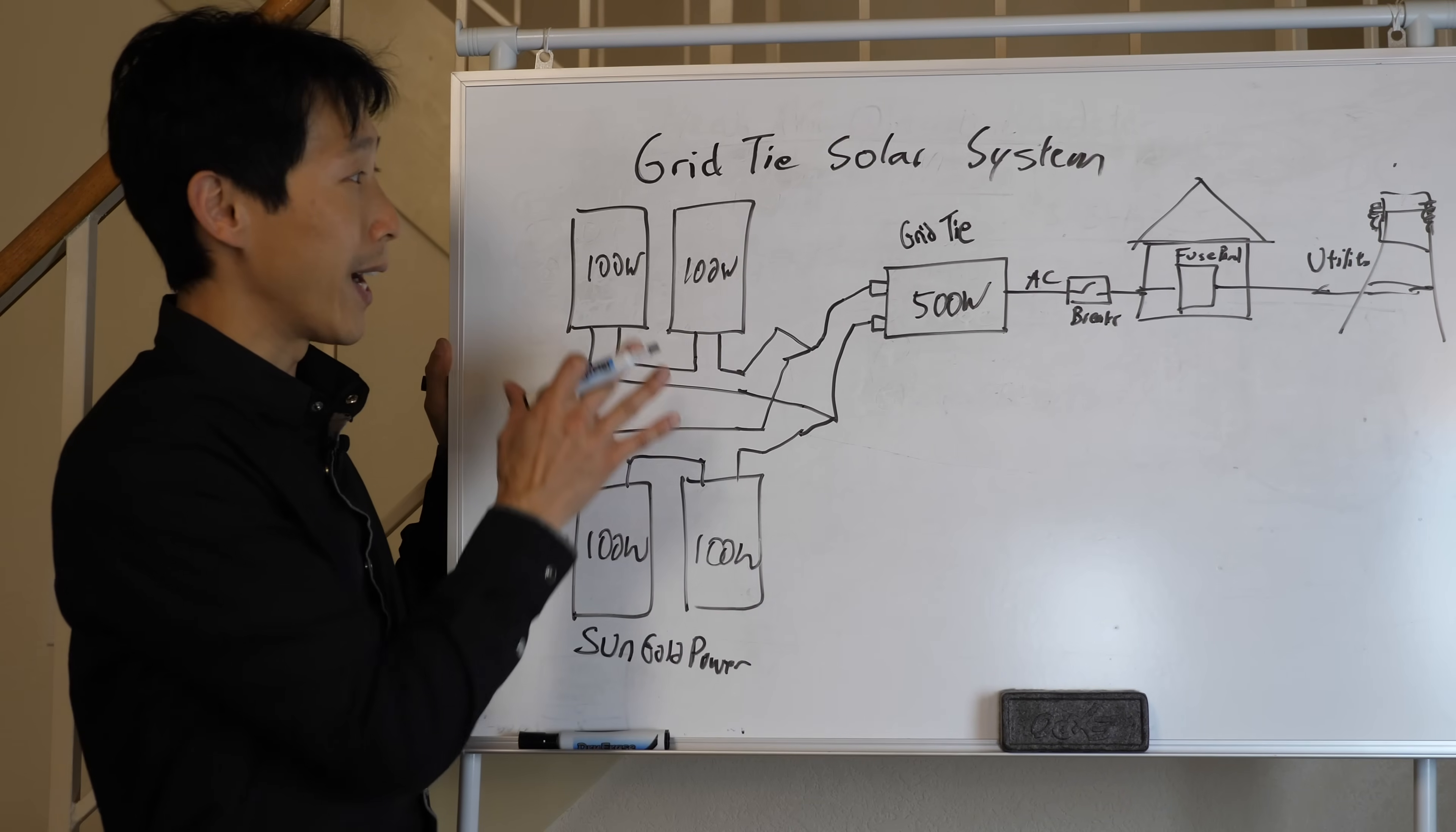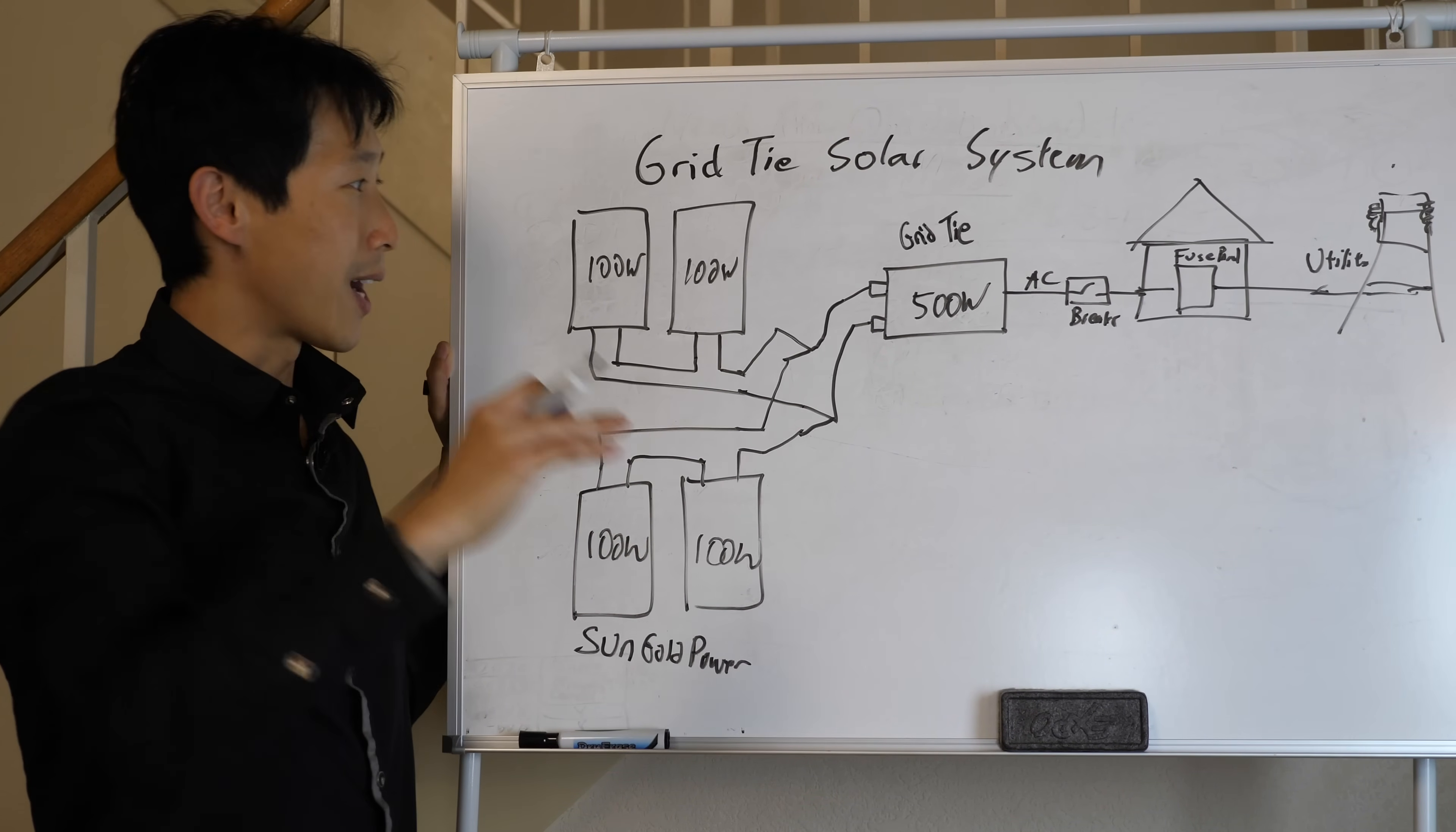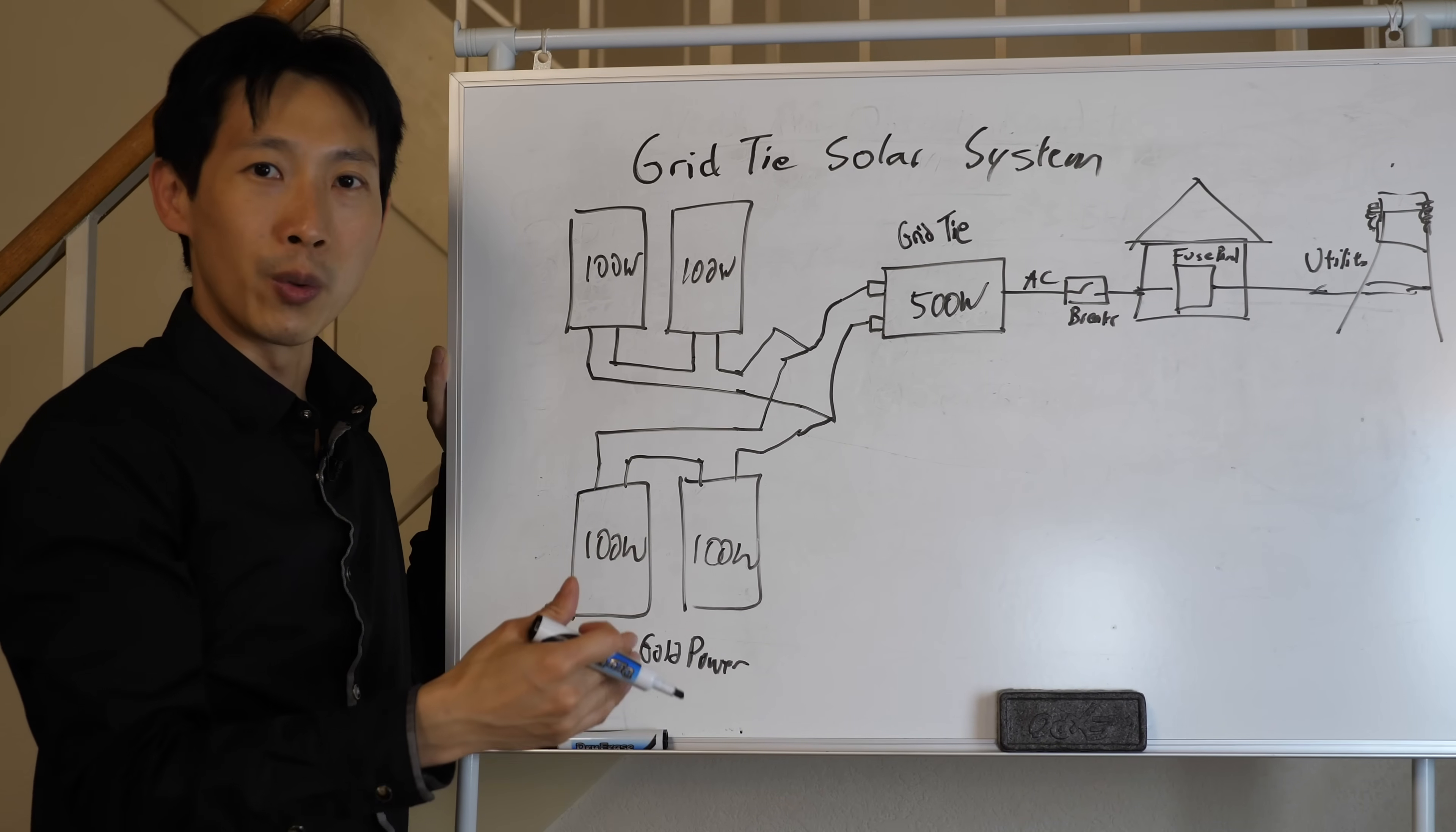So as you guys saw before, I had about 9 watts of power given the really gloomy day, all the clouds in the sky. I added a second set. Now it's about 18 watts, 19 watts. So this is in line with what I expect. And it appears that the system is working okay.